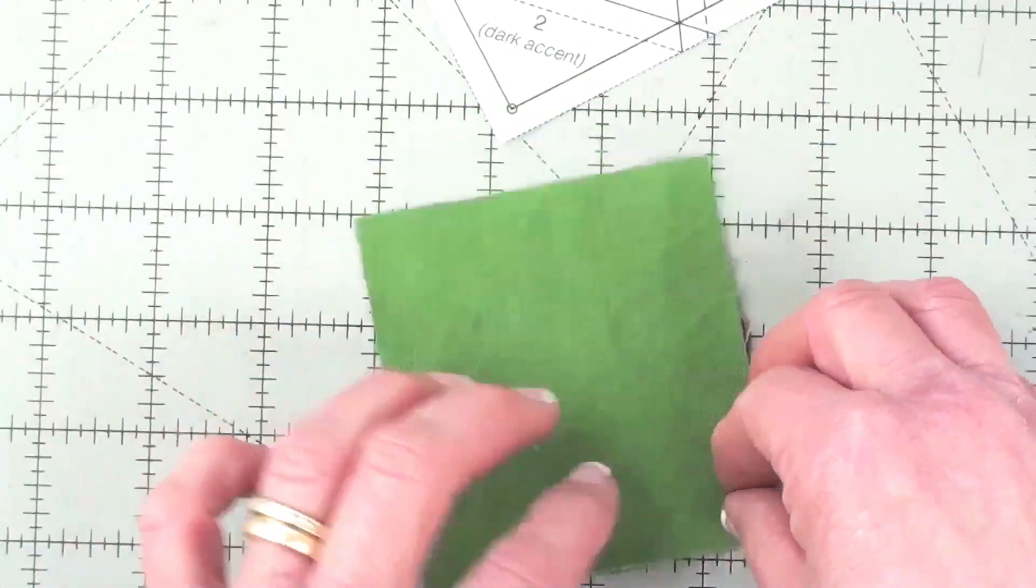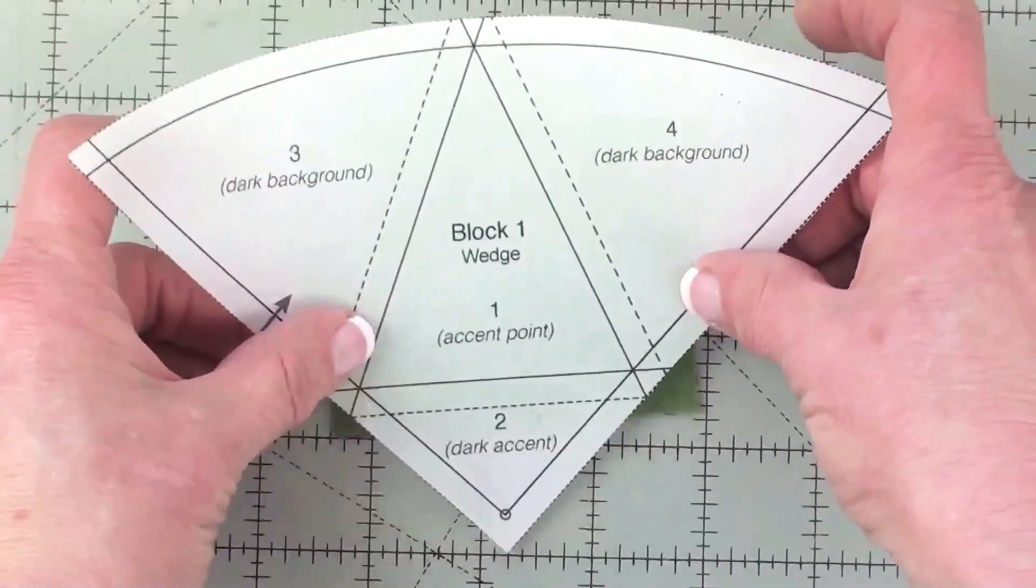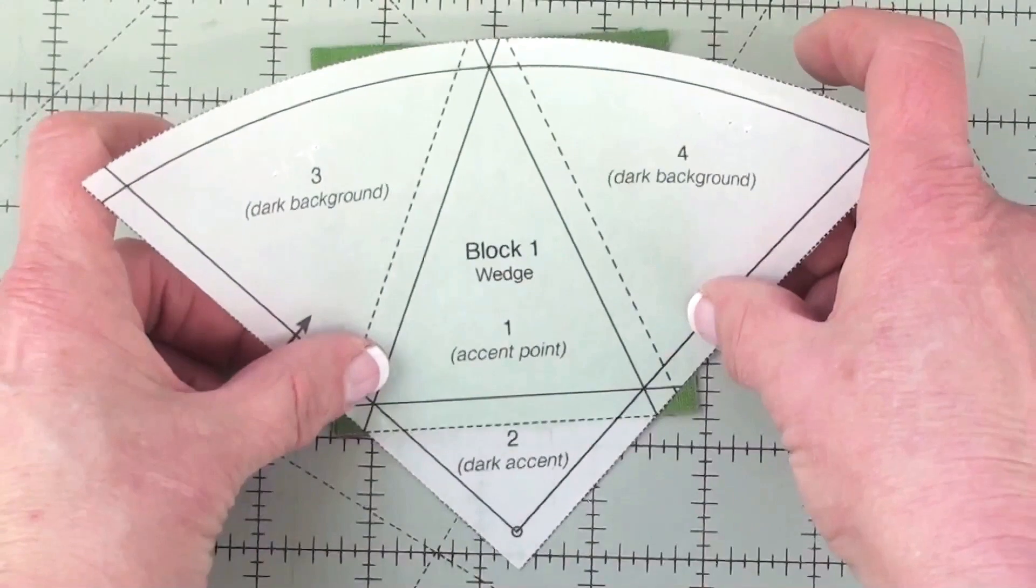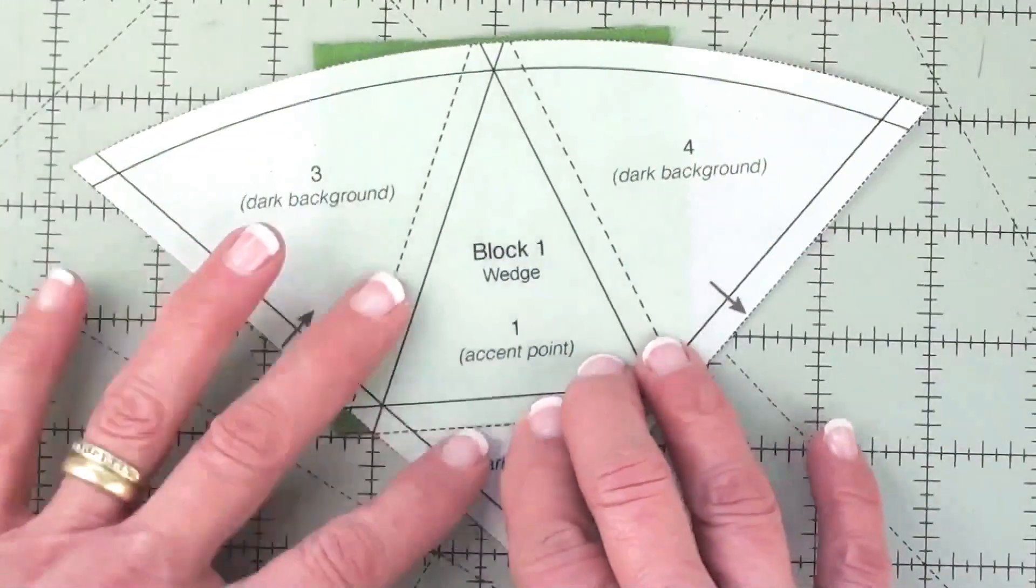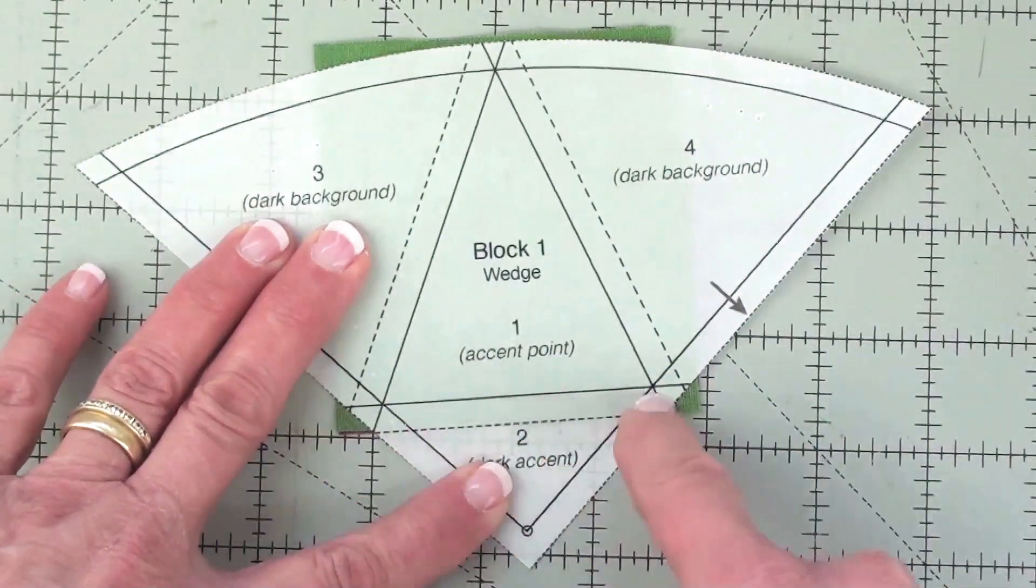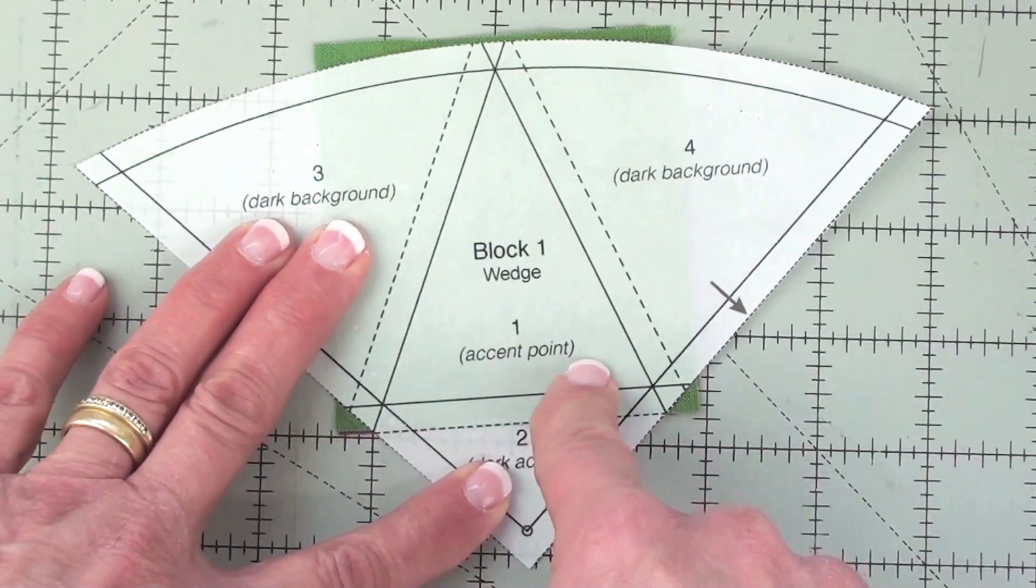Then I would position the paper on top of it centered and I would sew across the paper joining one and two to the paper.